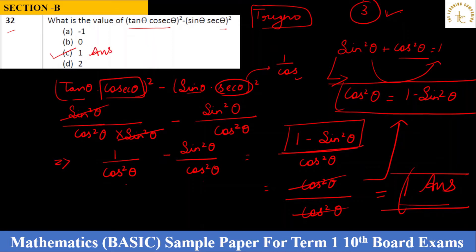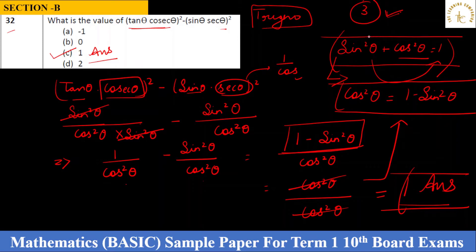It was an easy question, but if you don't know the trigonometric identities you won't be able to solve it. There are three fundamental identities — all the basics are very important. Sometimes one question uses 2–3 formulas, so if you've learned them all, you can solve it.